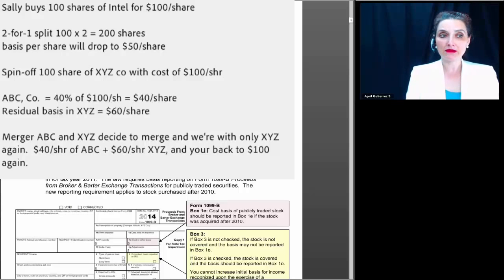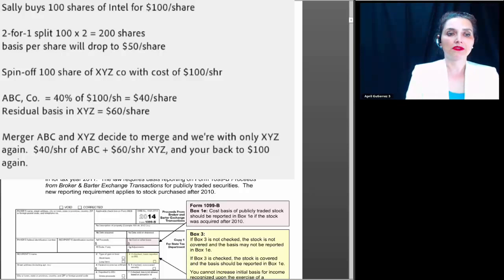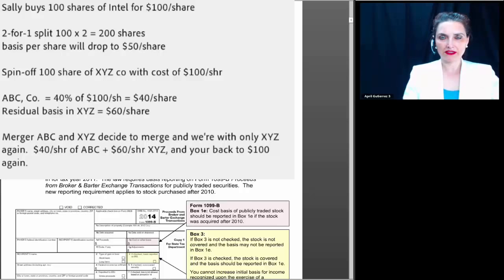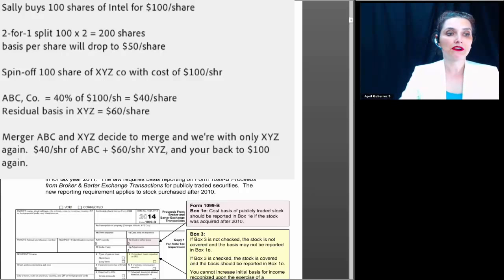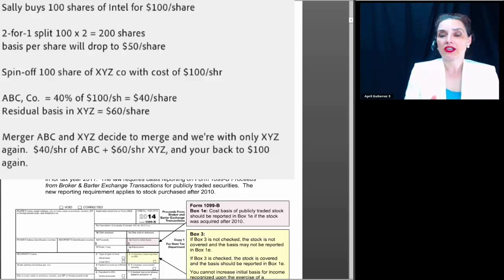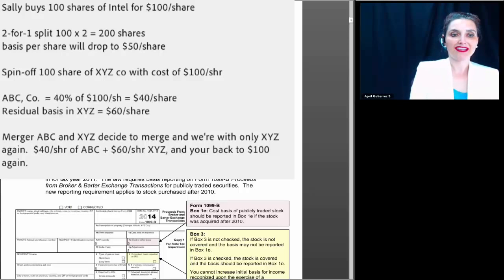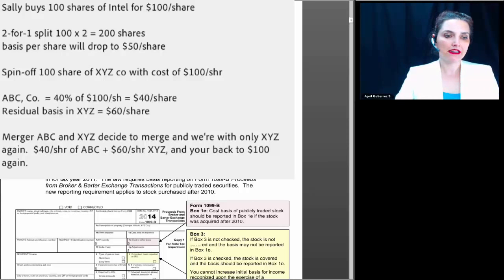The opposite of a spin-off is a merger. A merger would happen as — let's just say ABC and XYZ go on for a few years and decide to merge. As a result, ABC disappears and all we're left with is XYZ. It usually isn't that simple — they usually spin off to something else and then merge again. But in our example: if your cost per share in ABC was $40 and your cost per share in XYZ was $60, and after the merger you only have XYZ shares left, then you take $40 plus $60 and you're back up to $100 per share again.